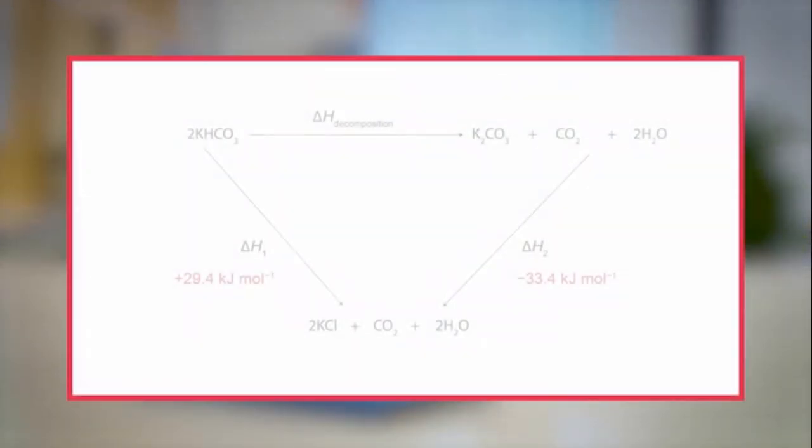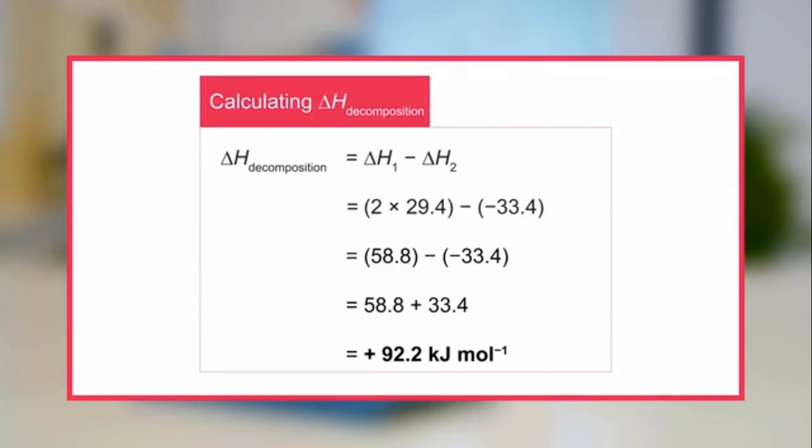The value for delta H1 and delta H2 can now be added to the Hess's law cycle. Delta H decomposition is calculated using the values for delta H1 and delta H2. Note that the value for delta H1 is multiplied by 2 because 2 moles of potassium hydrogen carbonate are reacting. The calculated value is 92.2 kilojoules per mole. The overall process is endothermic, because bonds have to be broken for decomposition to occur.